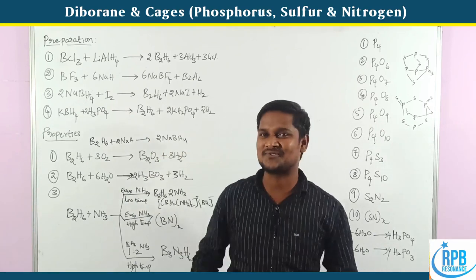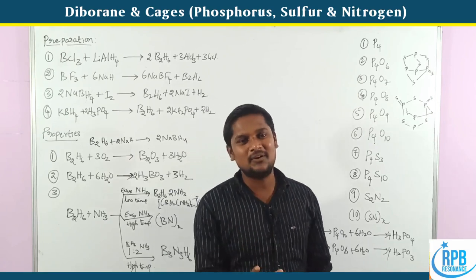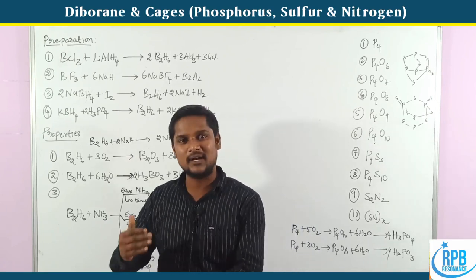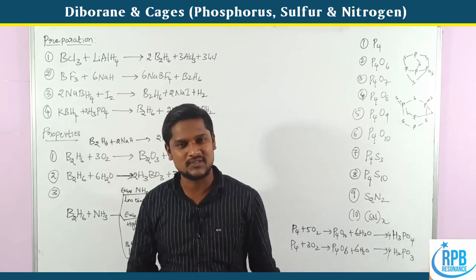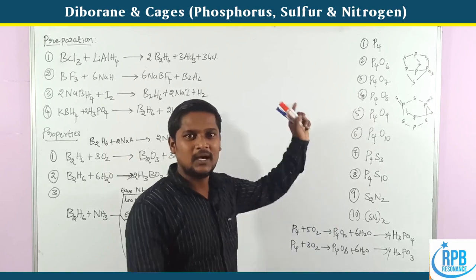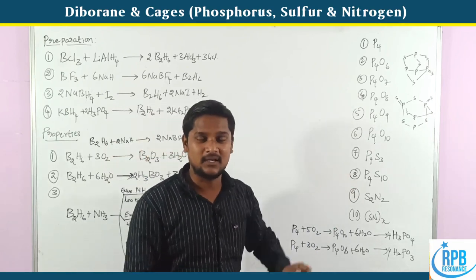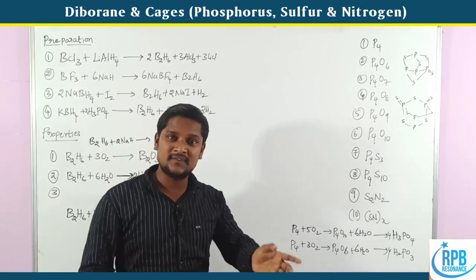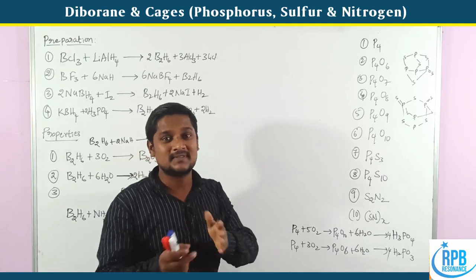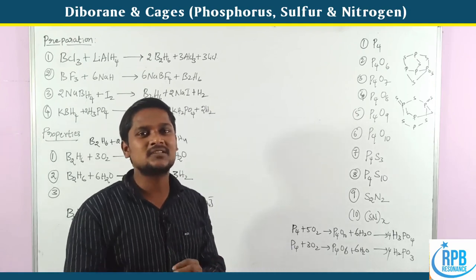So first topic: diborane. In CSIR exams, one of the questions is on this topic. That's about phosphorus, oxygen, and hydrides, as well as phosphorus-sulfur compounds, sulfur-nitrogen compounds, and phosphorus compounds.